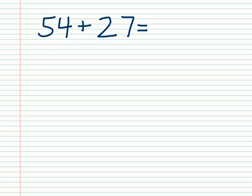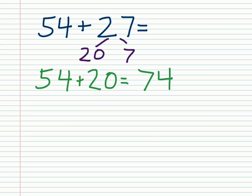For this one, let's keep 54 the same and we'll break 27 just into tens and ones. So 27 would be 20 and 7. Then we add each of these parts to 54 one at a time. So I'll start with 54 plus 20, which is going to give me 74. Then I will add the 7, and that gives me 81 for the answer.